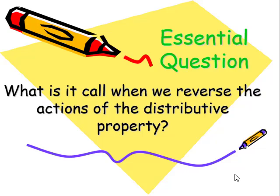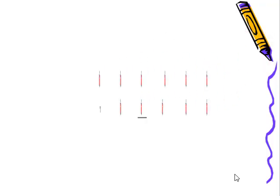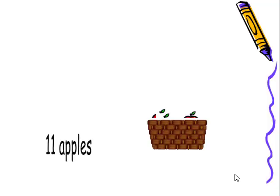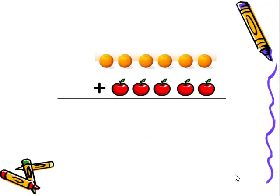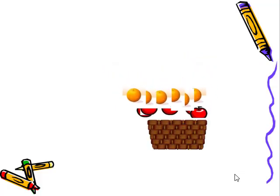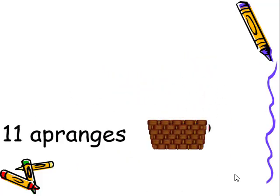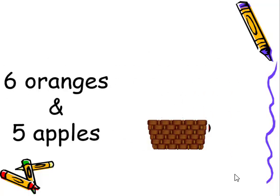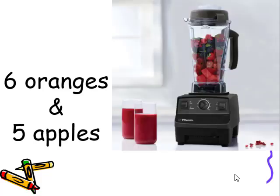What is it called when we reverse the actions of the distributive property? If I wanted you to add six apples and five apples, you would simply put it in a bag and you'll know that you have 11 apples. How about if I wanted you to add six oranges and five apples? What would you do now? Well, if you stated we would have 11 appranges, that would be wrong. If you said 11 apples, also wrong. We would simply say we have six oranges and five apples because they're not the same.